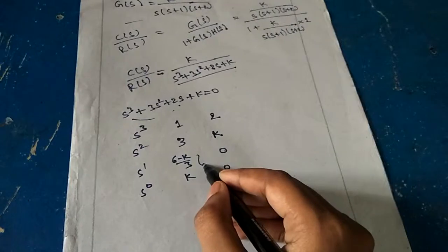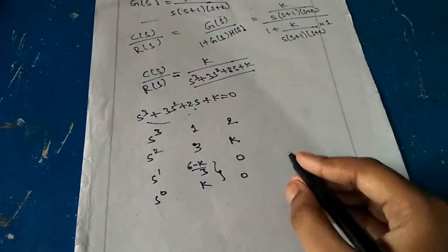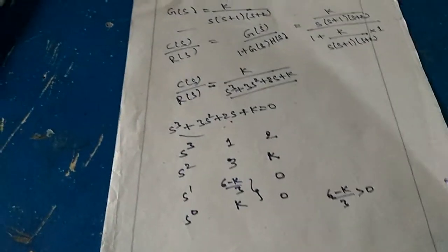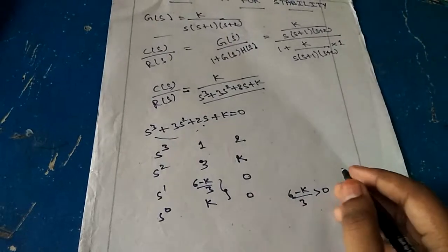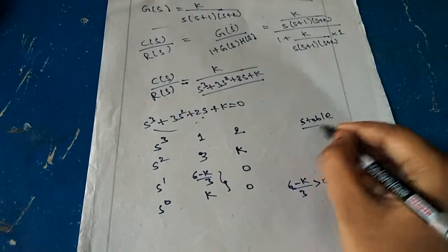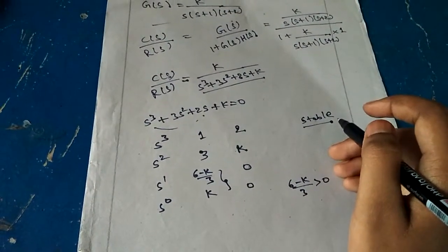Now by using this we should find the k value. First, (6-k)/3 will be greater than 0. Why we should take greater than 0? Because we have to find the value of k for which the system should be stable.